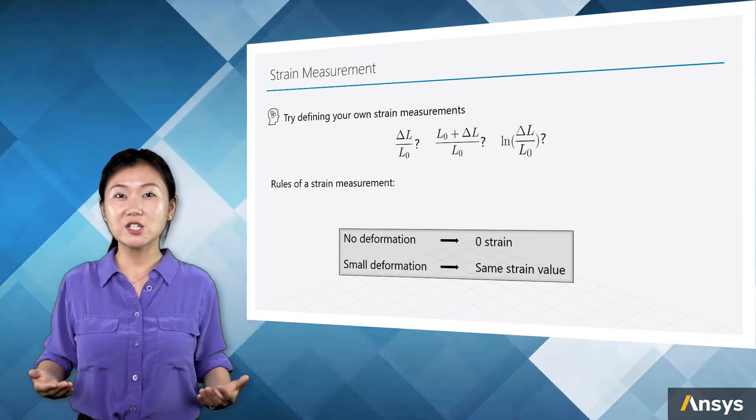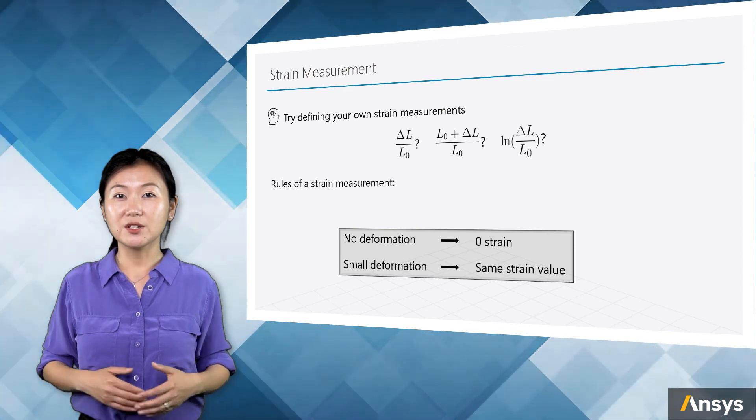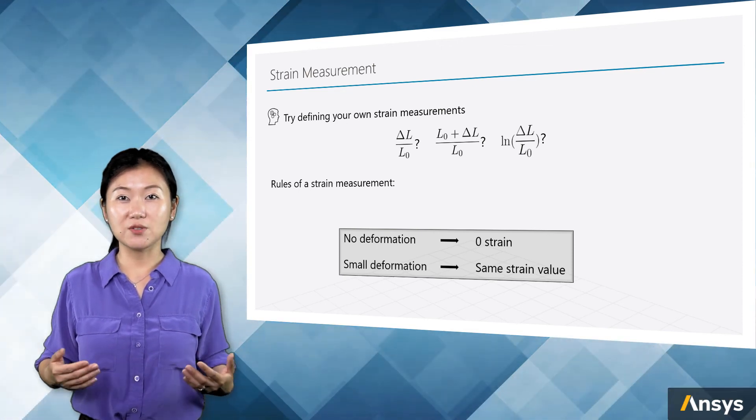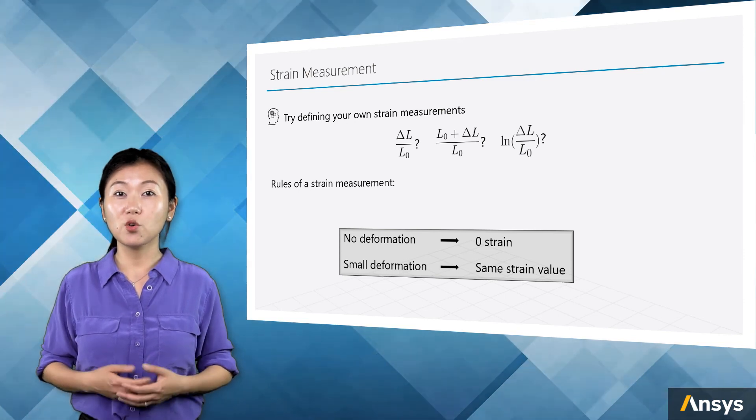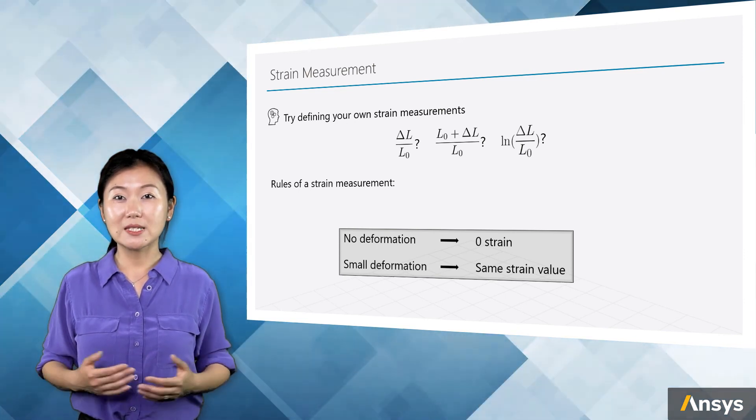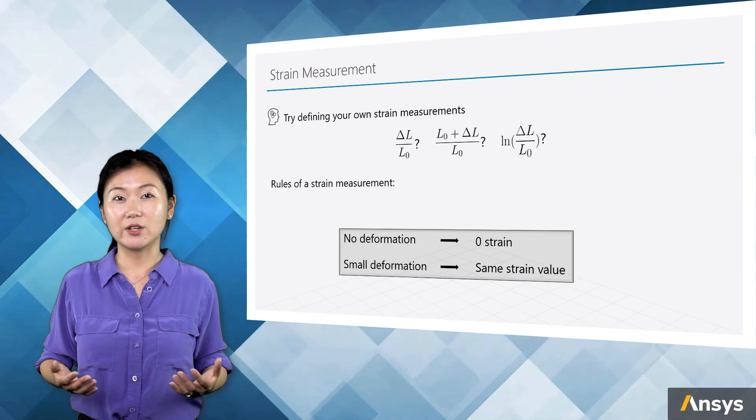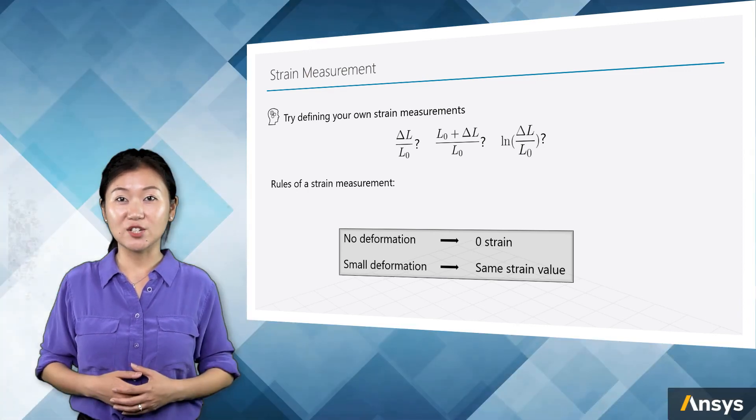Rule number two is, for all valid strain measurements, when deformation is very small, the strain values from different strain measurements should be very close to each other. So for a small deformation problem, we expect the same or very similar strain value, no matter which strain definition is used.